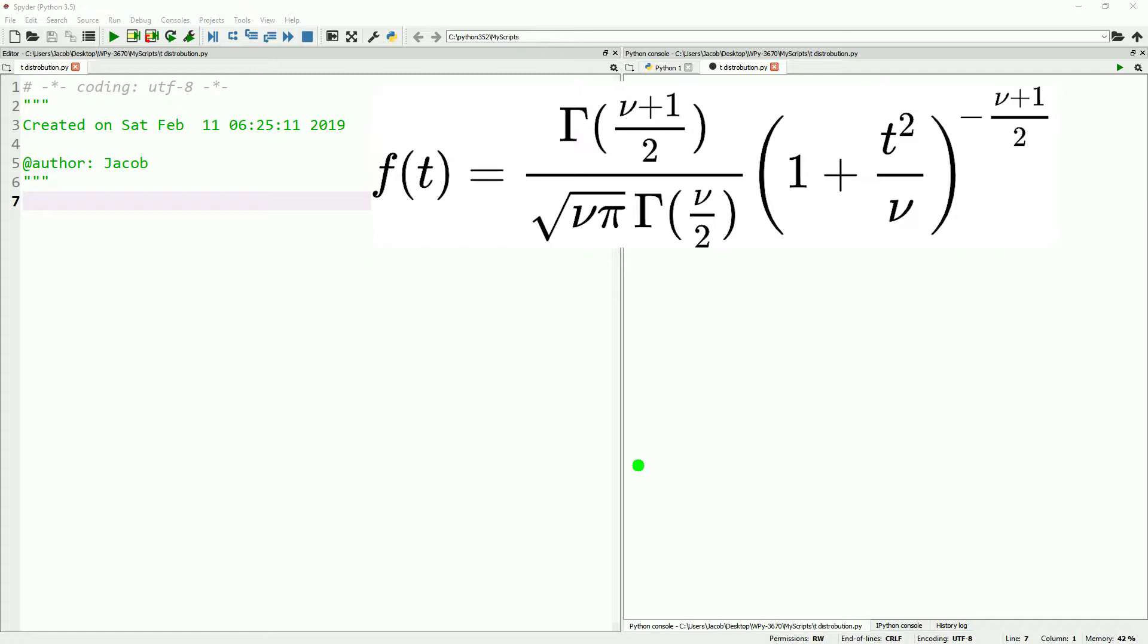We're going to break this probability distribution function into three parts: the numerator, the denominator, and the polynomial on the right hand side. We'll make functions for each one of those parts, and then combine it together.